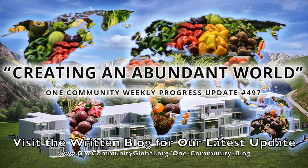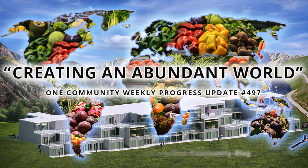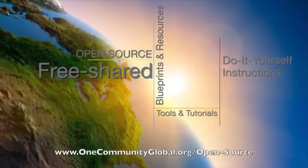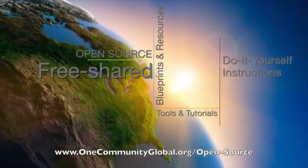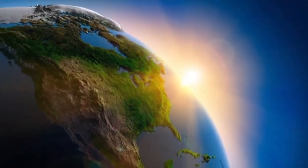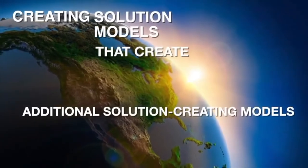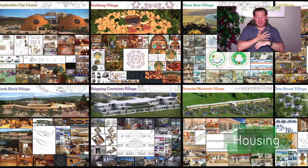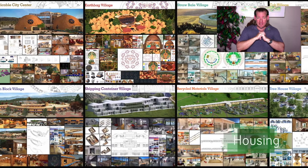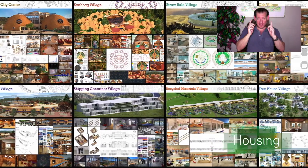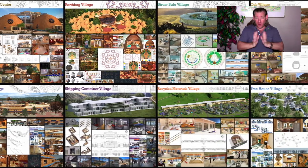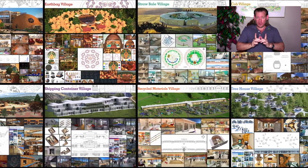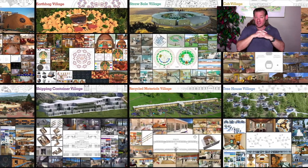Creating an abundant world — One Community weekly progress update number 497. One Community is a 501c3 non-profit organization creating open source and free shared blueprints, resources, tools, tutorials, and do-it-yourself instructions for highest good living. My name is Jay Sable and I am the executive director of the One Community 501c3 non-profit organization. One Community is bringing together people with the consciousness and desire for the highest good of all life on this planet to build sustainable and self-replicating teacher demonstration hubs as a pathway to global sustainability.